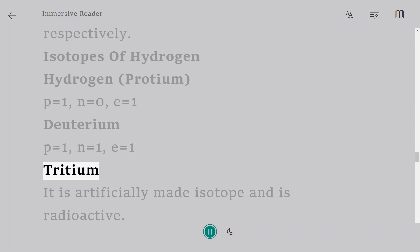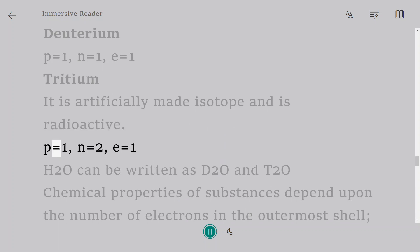Tritium: It is an artificially made isotope and is radioactive. P equals 1, N equals 2, E equals 1.